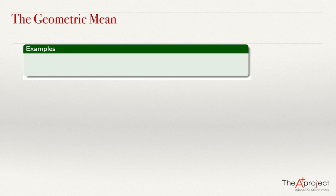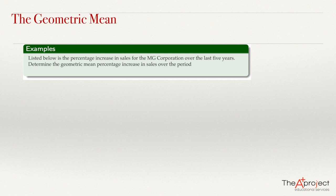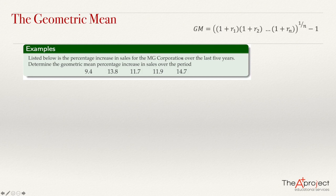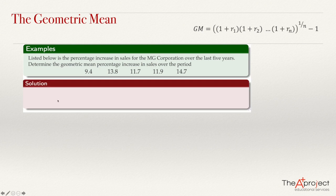For a second example: listed below is the percentage increase in sales of the MG Corporation over the last five years — determine the geometric mean percent increase in sales over the period. The percent increases are: 9.4%, 13.8%, 11.7%, 11.9%, and 14.7%. Using our formula, I add 1 to each percent increase. So 9.4% is 0.094, plus 1 gives 1.094. And 13.8% is 0.138, plus 1 gives 1.138.